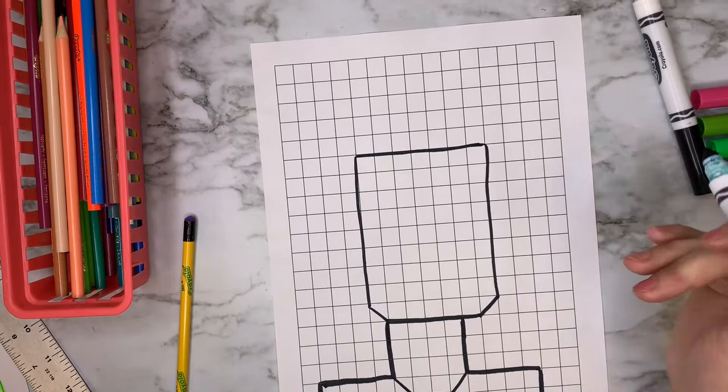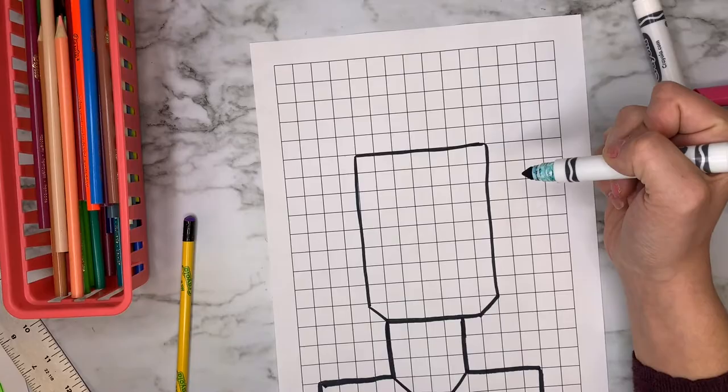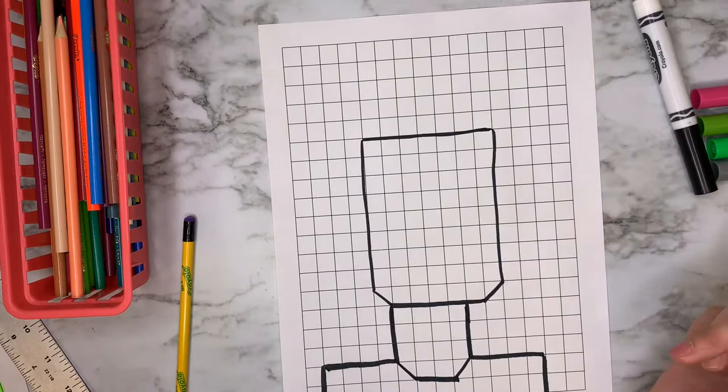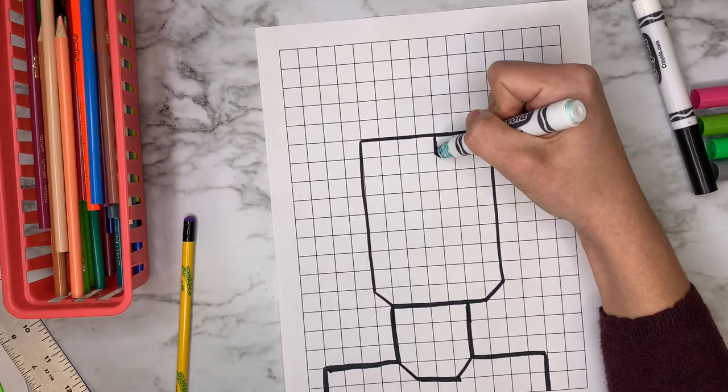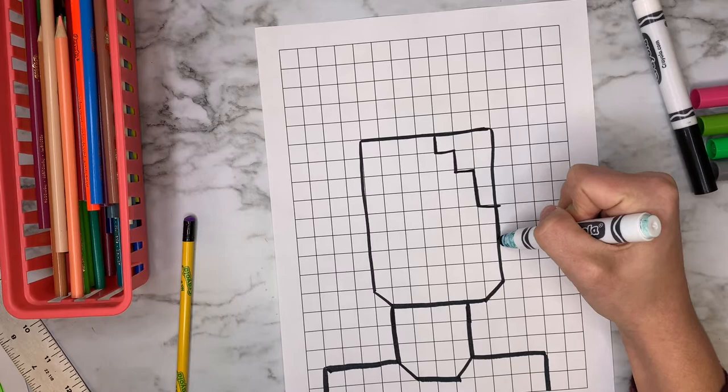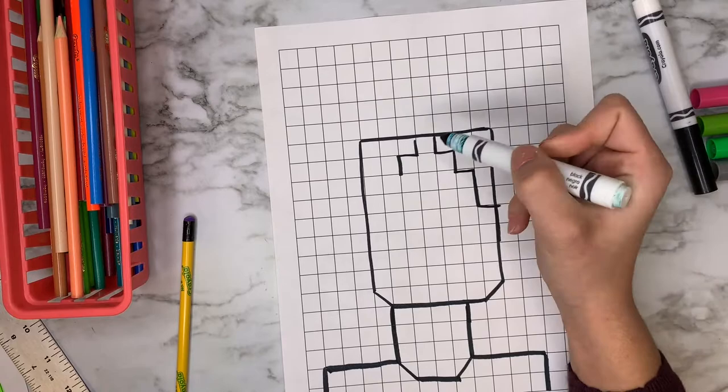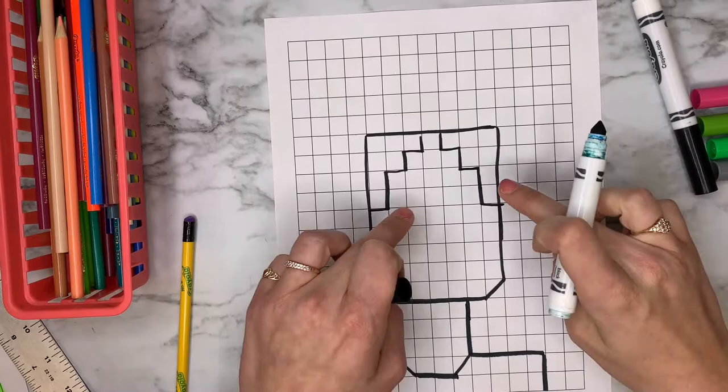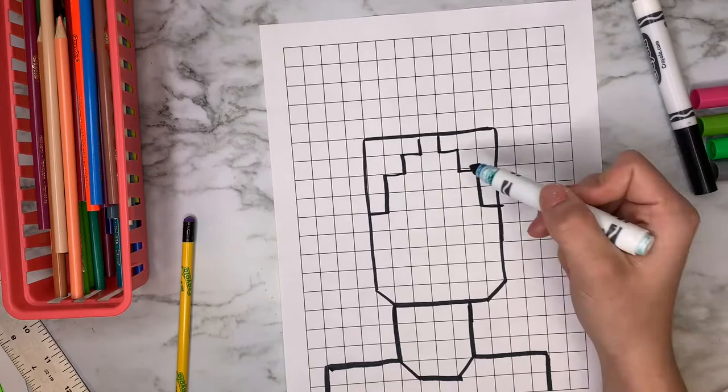So next we're going to add hair. Now boys might want shorter hair than girls. So look at your squares and see where you'd want your hair to be. I'm going to start at the top. I'm going to make a zigzag pattern because my hair is curly and you can make your zigzags larger or smaller depending on how your hair looks. And you can always adjust. So right there, that could be a boy haircut, for example, or if you're a girl with shorter hair, that would also work well for you.